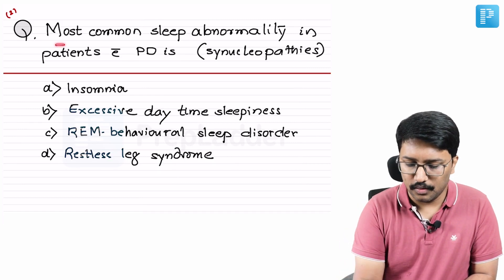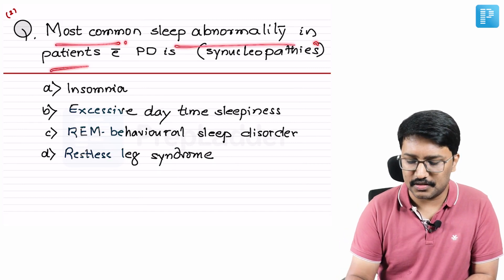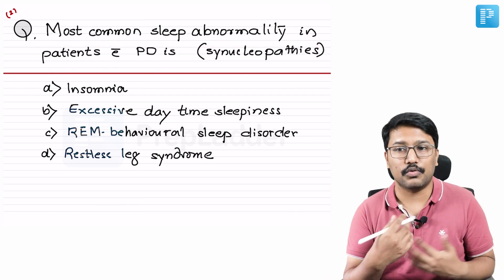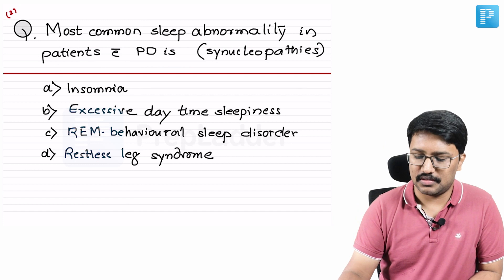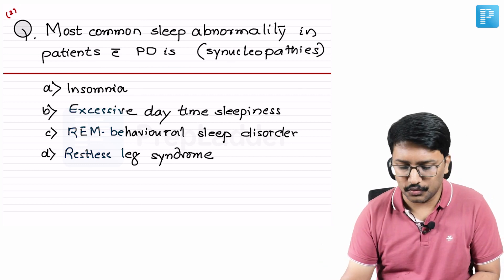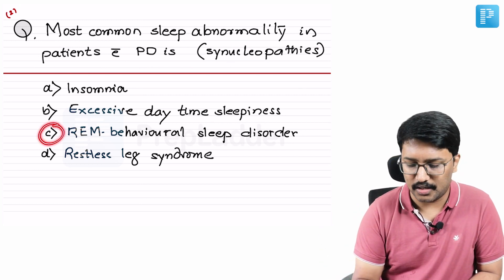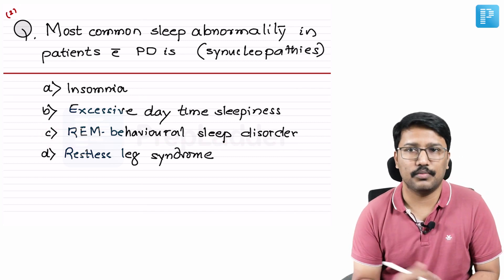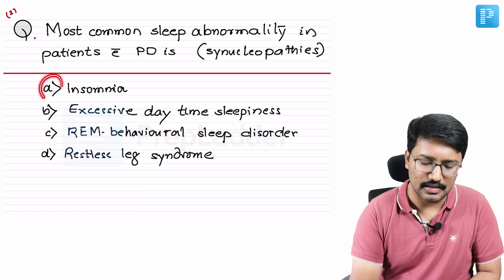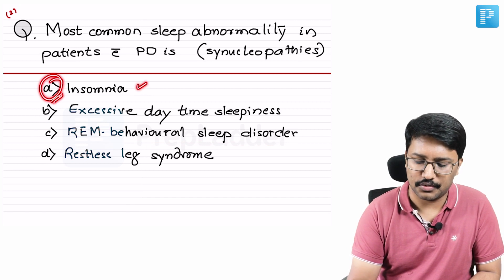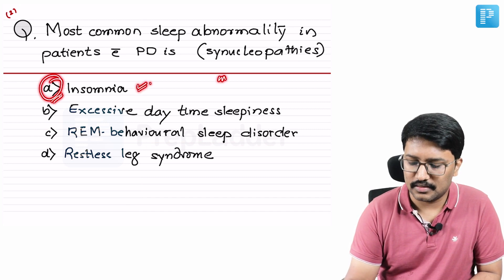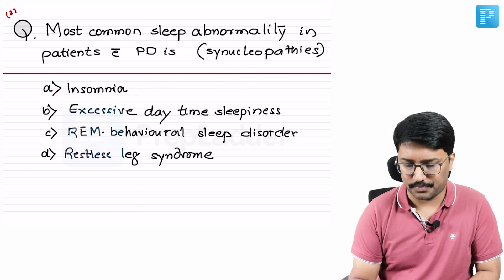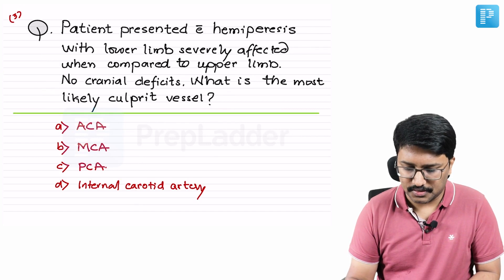Next question: most common sleep abnormality in patients with Parkinson's disease — or synucleopathies. You might think REM behavioral sleep disorder is the answer since it's characteristic, but no — the most common sleep abnormality is insomnia. This is an important point: in Parkinson's, the most common sleep abnormality is insomnia.